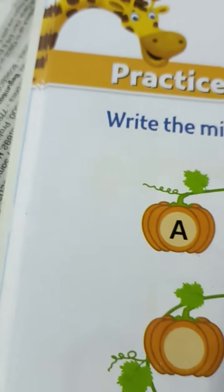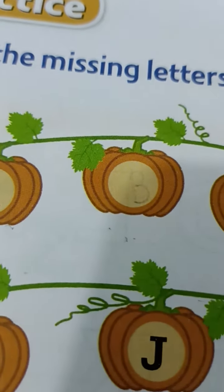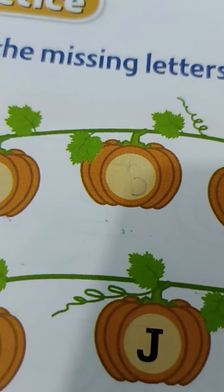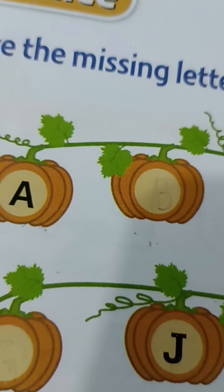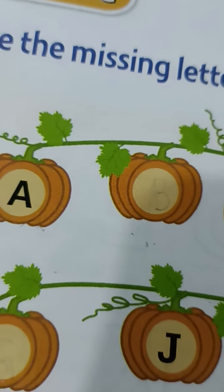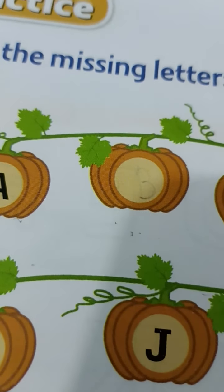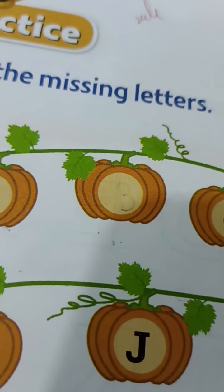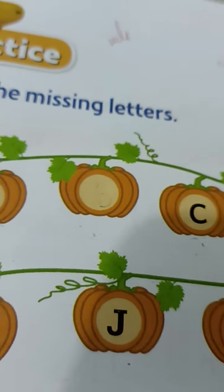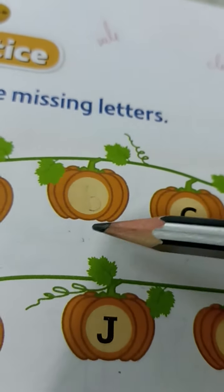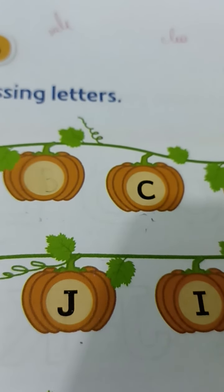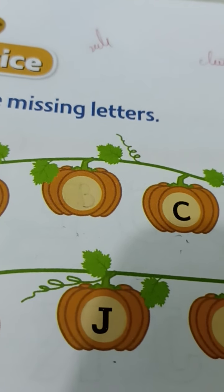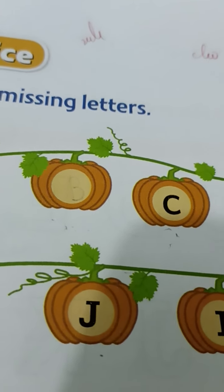See children, in last class we completed uppercase letters A to Z and one sticker activity also. Now today we are going to write missing letters. So many pumpkins are there. Here uppercase letters are there but not all — some letters are missing. Which ones are missing? Those letters we have to write.